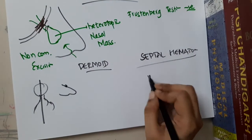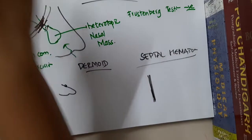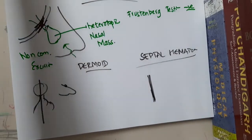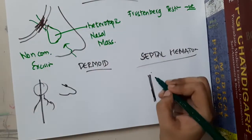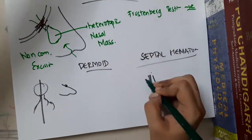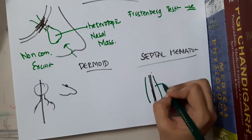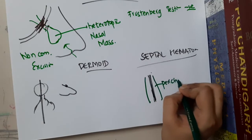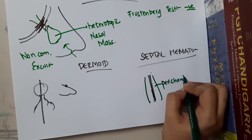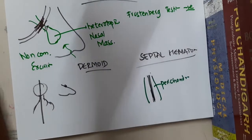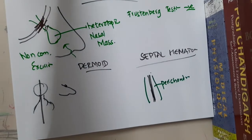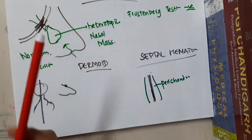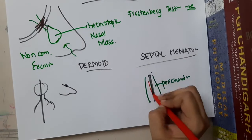The actual cartilage of the septum, and surrounding the septum you will have the perichondrium. These two structures will normally be adherent to each other, but if there is a disruption, there can be development of blood between them.